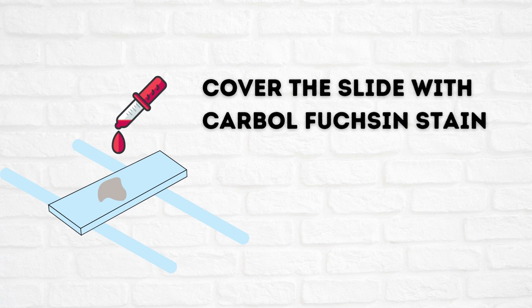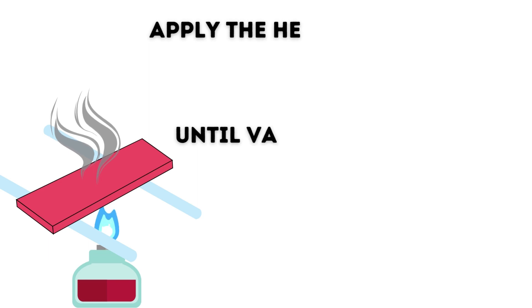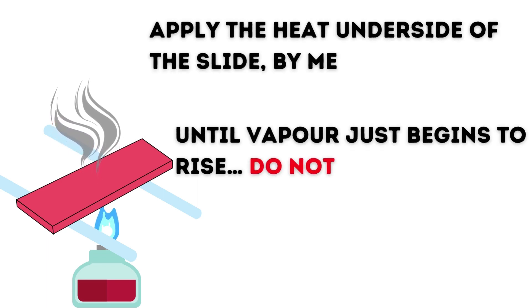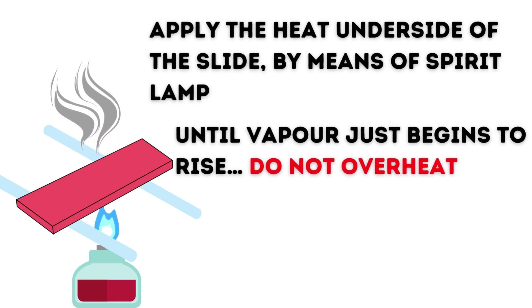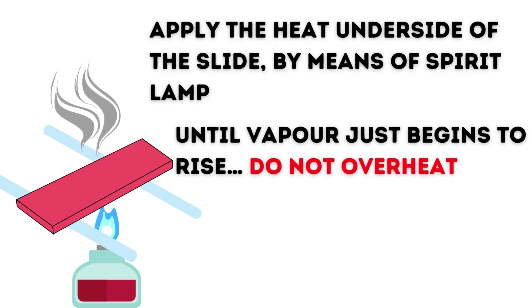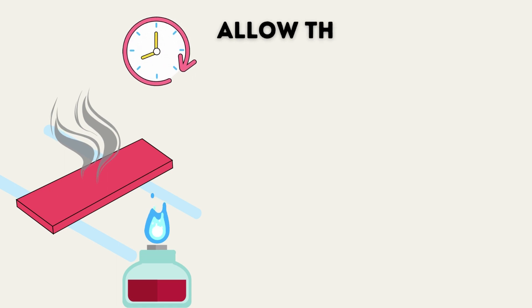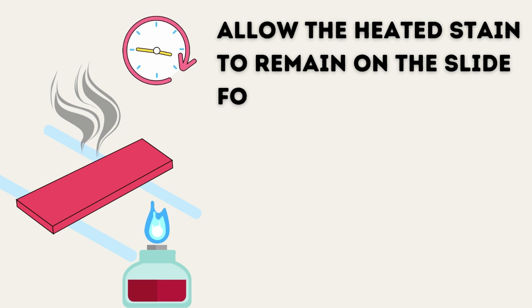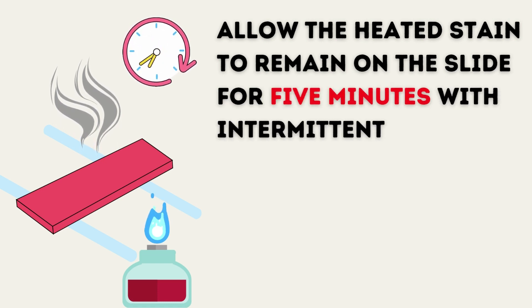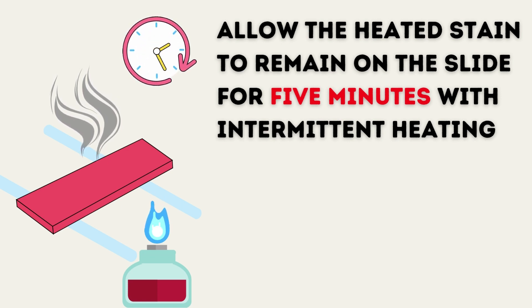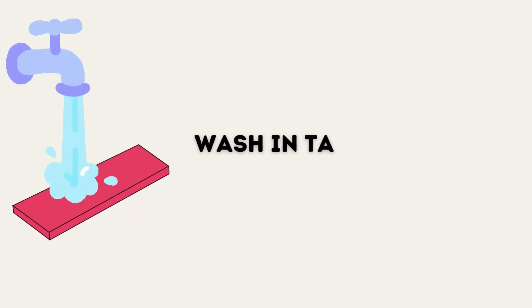The first staining step is to cover the whole slide with carbol fuchsin stain. It is necessary to cover the entire slide — not just the smear — because we need to apply heat, and the stain should not dry off. Then apply heat to the underside of the slide using a spirit lamp until vapor just begins to rise; do not overheat or allow the stain to boil. Allow the carbol fuchsin to act for 5 minutes, with intermittent heating to keep the stain hot, which facilitates penetration into the bacterial cell wall.